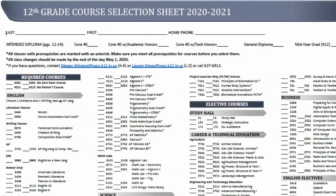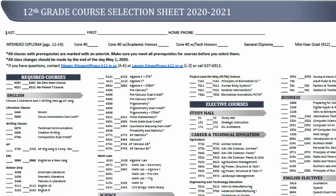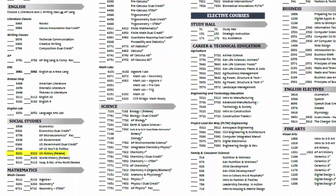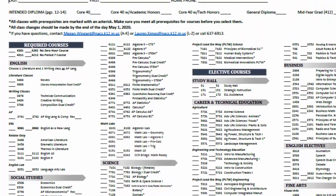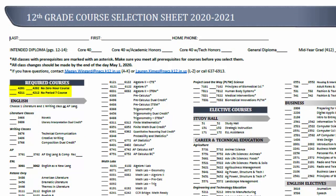On your course selection sheet, you'll notice there are year-long and semester-long courses. If there are two lines and the course ends in one and two, this means it's a year-long course and you must choose both semesters. For example, U.S. History has two lines and the course numbers are 8221 and 8222. If a course ends with the number 6, this means it's a semester-long course. Make sure you select No Zero Hour Course or No Period 7 Course found on the left-hand side of the sheet, or if you want all eight periods, do not select either of those options.